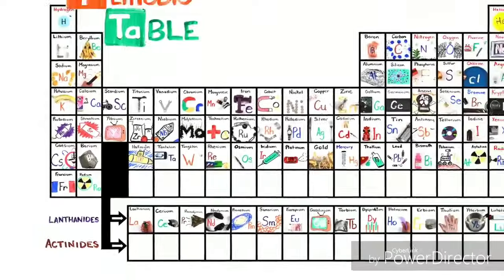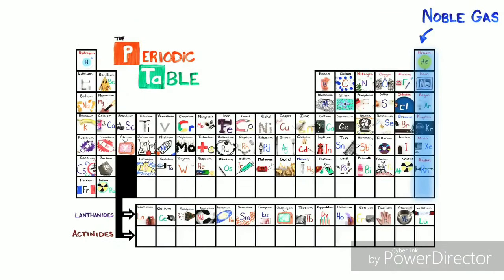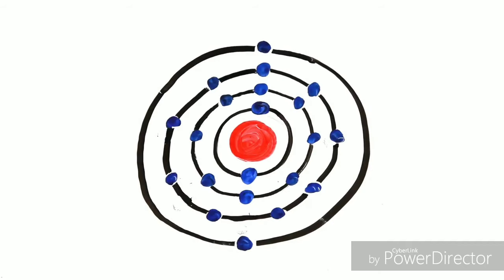This is the periodic table, noble gases stable, halogens and alkali react aggressively. Each period will see new outer shells, where electrons are added, moving to the right.